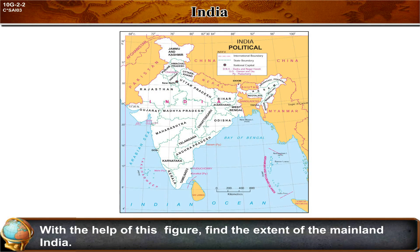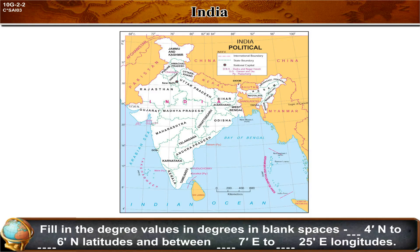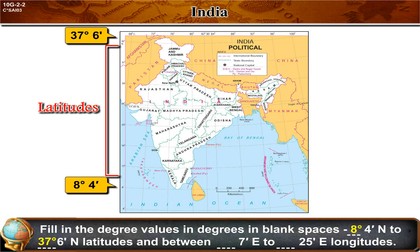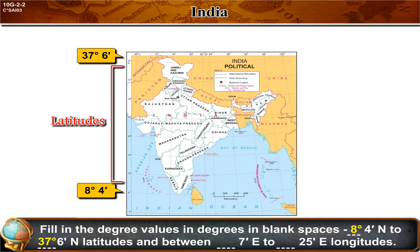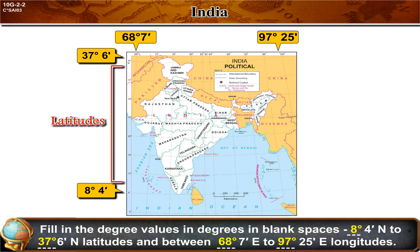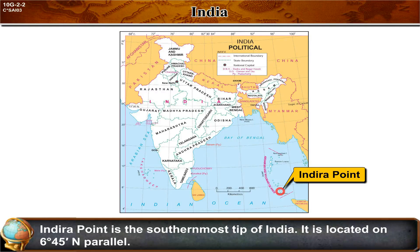With the help of this figure, find the extent of mainland India and fill in the degree values: 8 degrees 4 minutes north to 37 degrees 6 minutes north latitude, and between 68 degrees 7 minutes east to 97 degrees 25 minutes east longitude. Indira Point is the southernmost tip of India, located at 6 degrees 45 minutes north parallel.